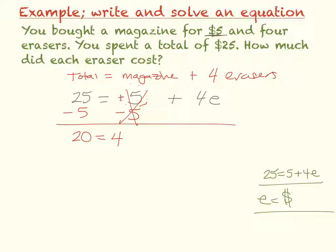Twenty-five minus five is twenty, equals four times E. So, I divide by four, because the opposite of multiply is divide, divide by four, and E equals five. So, what does that mean? That means each eraser cost five dollars. And that is your final answer.